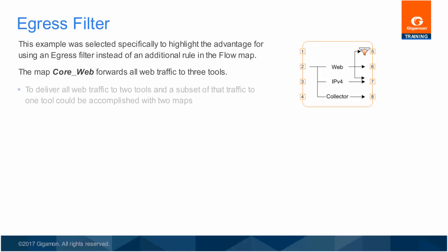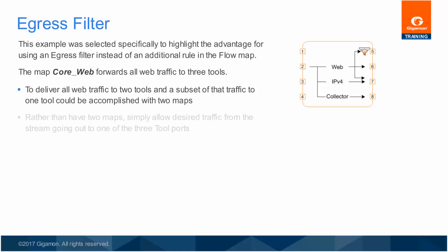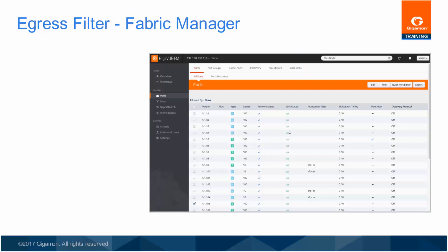You could create a core web additional map which forwards a subset of the web traffic to port 5, but using the existing map that forwards all web traffic is easier. In this example, you will create an egress filter to forward only a particular web server's traffic. You will now configure egress filtering using the Fabric Manager web interface.